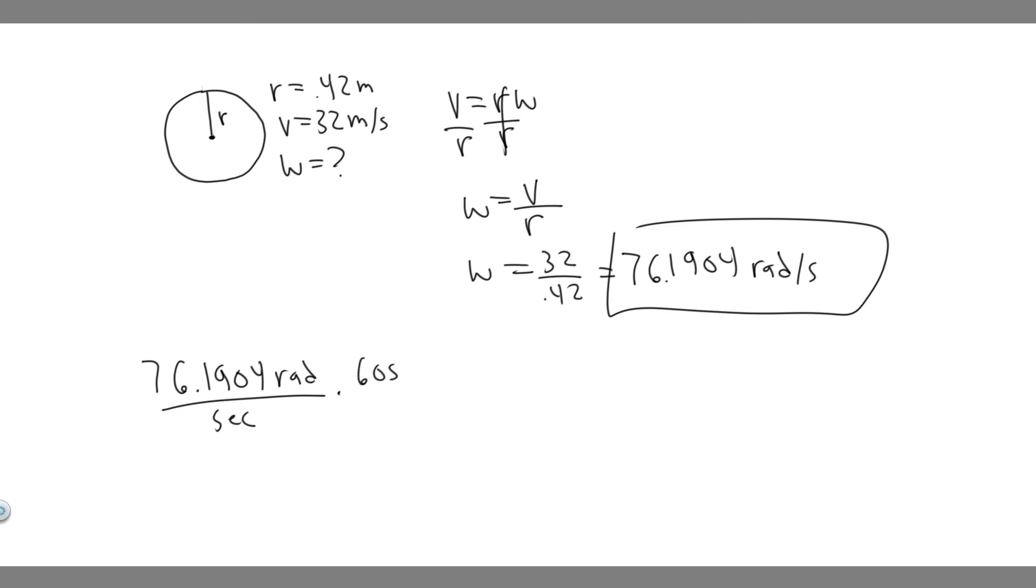So we know that there are 60 seconds for every minute. Basically what you'll do is just multiply by 60. That'll cancel the seconds. Now we have radians per minute. And then we want to convert radians to revolutions.